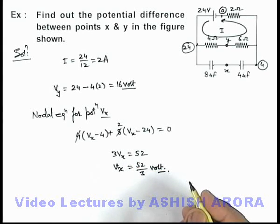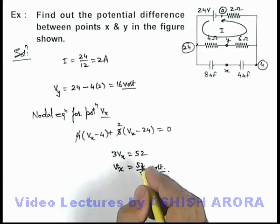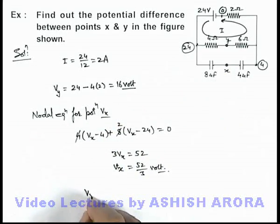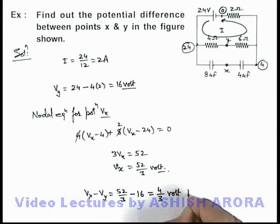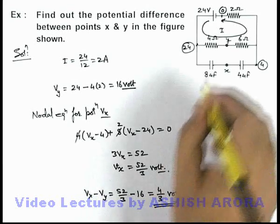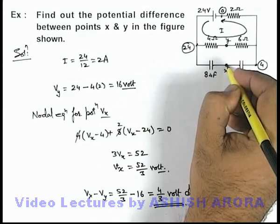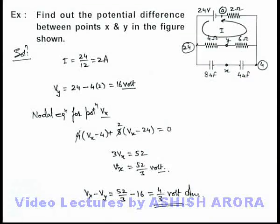Now we can easily find out the potential difference between y and x. So we can write Vx minus Vy is equal to 52 by 3 minus 16. On simplifying, it is 52 minus 48, that'll be 4 by 3 volt. That'll be the answer to this problem. This is the potential difference between points y and x in a steady state of the circuit.